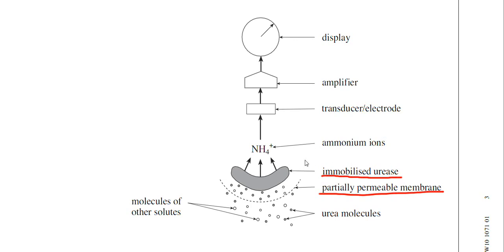The product then of the immobilized urease is ammonium ions. That's the product there. The next part of the biosensor is the transducer. That's an important part of the biosensor. You've got an amplifier there and then the display. So you need to know the functions of each of those components of the biosensor.